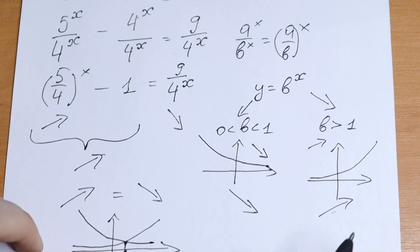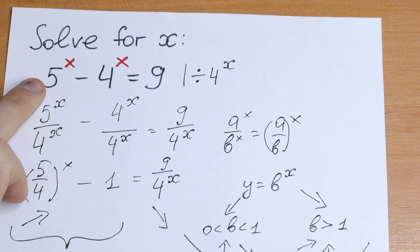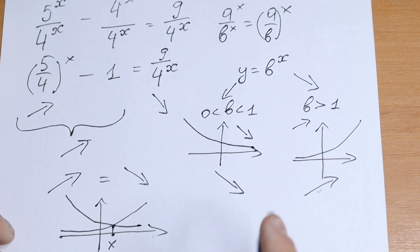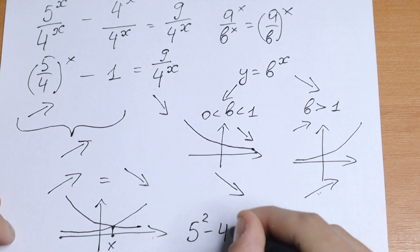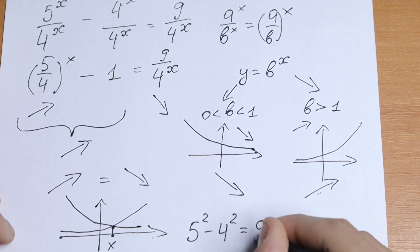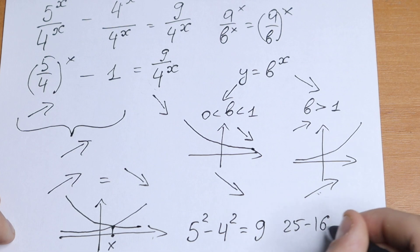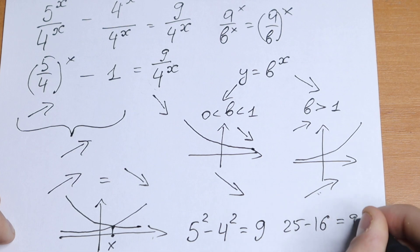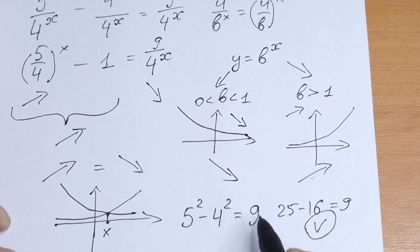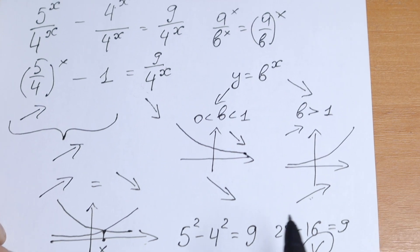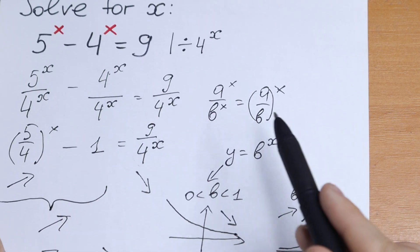It's not hard to see that by inspection x will be 2, because we will have 5 squared minus 4 squared equal to 9. Which is correct: 25 minus 16 equals 9. And this is good for us. So this root we can see by inspection.